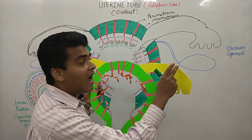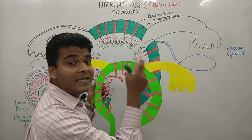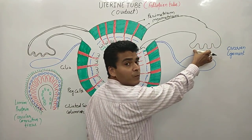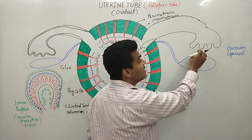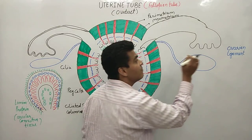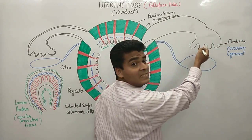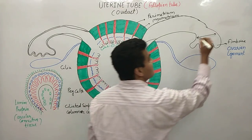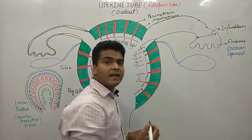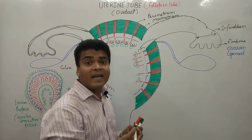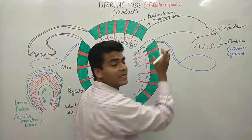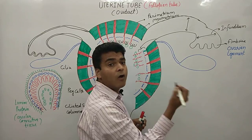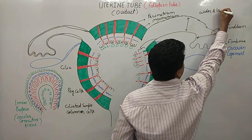In this fallopian tube we will discuss its structure as well as its histology, and how these fallopian tubes help in fertilization. So this portion of the fallopian tube has finger-like projections, and these finger-like projections are known as fimbriae. The funnel-shaped area is known as the infundibulum. Behind the infundibulum is a wider and longer area.